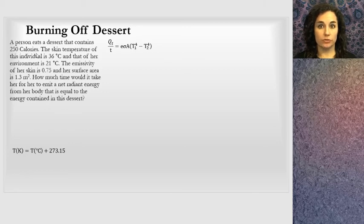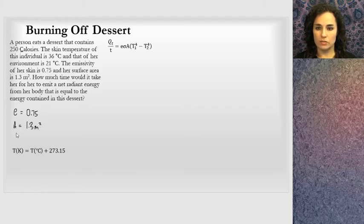The problem I picked out to exemplify radiation is burning off dessert. A person eats a dessert that contains 250 calories, big C calories. The skin temperature of this individual is 36 degrees Celsius, and that of her environment is 21 degrees Celsius. The emissivity of her skin is 0.75, and her surface area is 1.3. I'm identifying these quantities: emissivity, area. There's a couple of temperatures given. I'm going to remember to convert those to Kelvin in order to use them in my equation.